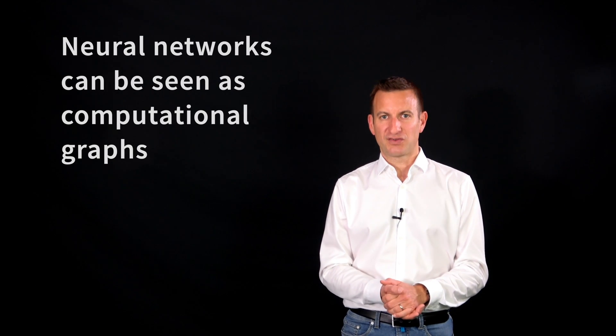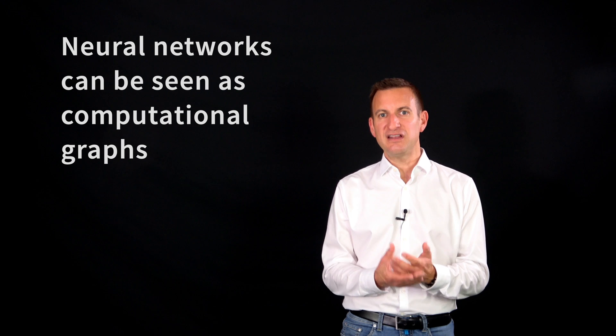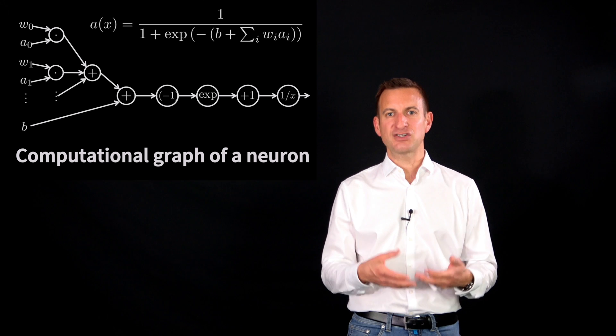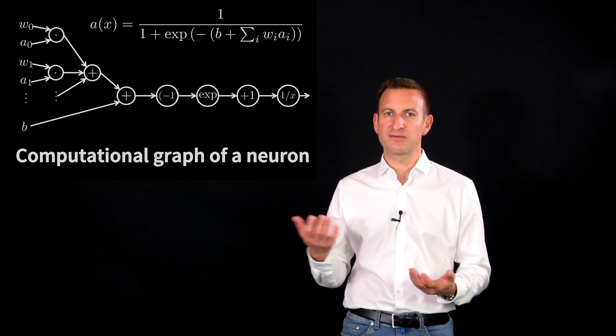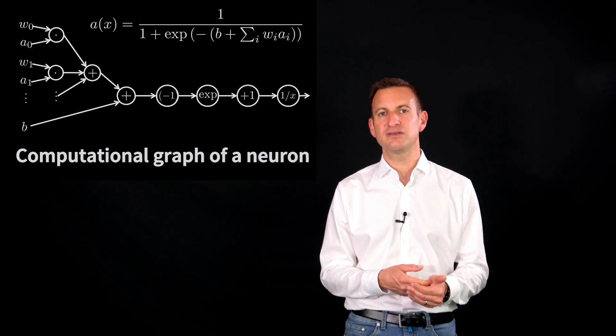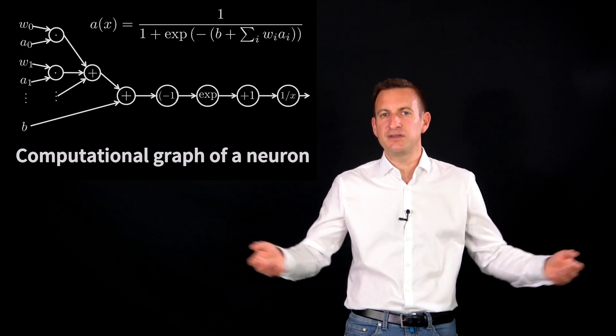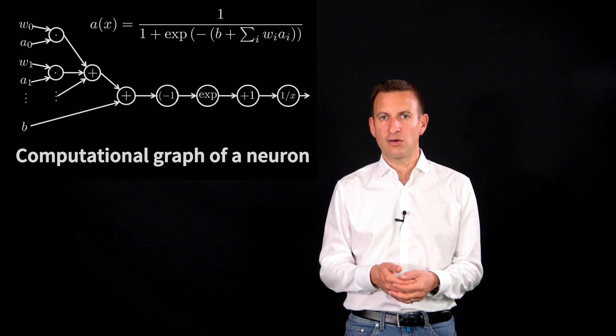So neural networks, for example, can be seen as such computational graphs. And you can see this if you look to a single neuron and you can actually write down the function that is represented by a single neuron here for example with a sigmoid activation function and you can write down the computational graph. And this means you can actually chain a lot of neurons and this will also be a computational graph.